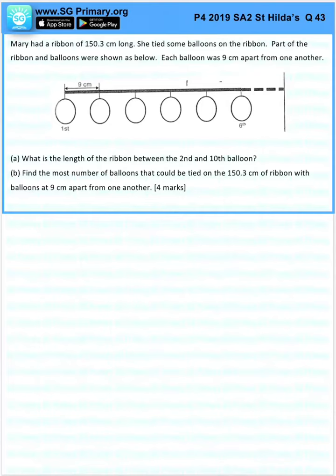Part A: What is the length of the ribbon between the second and the tenth balloon? Let's do this first. Let's observe between the first and the sixth balloon. There are 5 intervals.